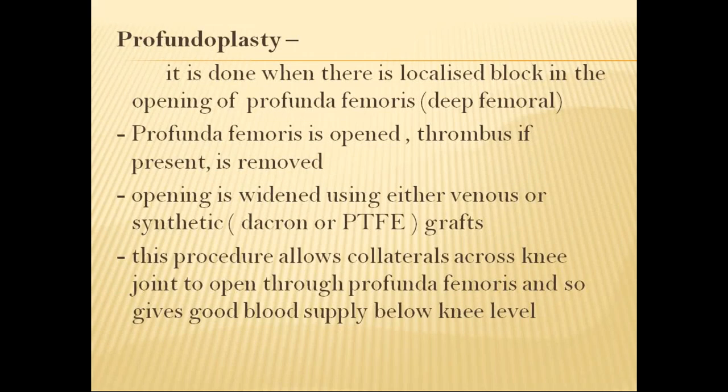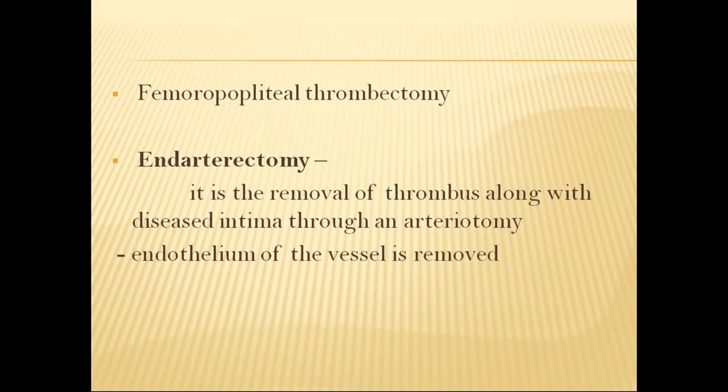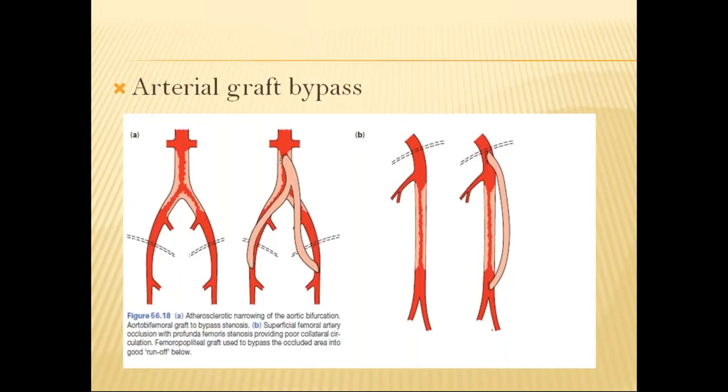Profundoplasty is done when there is a localized block in the opening of the profunda femoris. The profunda femoris is opened, thrombosis is removed, and the opening is widened using venous patch, PTFE, or Dacron grafts. This allows collaterals across the knee joint to open through the profunda femoris, giving good supply. Femoro-popliteal thrombectomy and endarterectomy — removal of thrombus along with diseased intima through an arteriotomy — can also be performed.